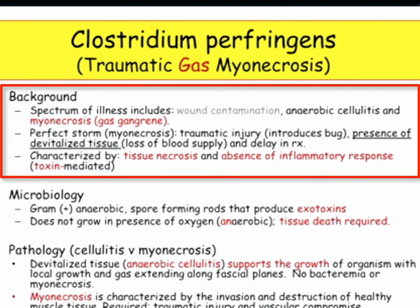You need devitalized, traumatized tissue — C. perfringens loves that. What it wants out of devitalized tissue is no oxygen; they're anaerobic. So you need dead tissue introduced, and a delay in therapy, then you get gas myonecrosis.